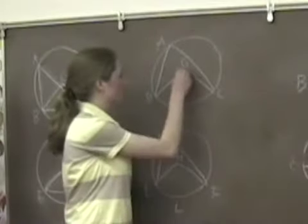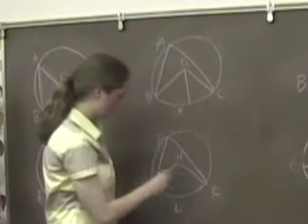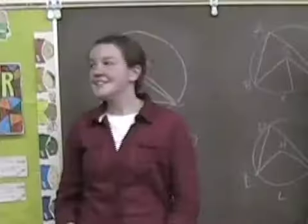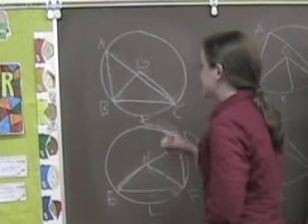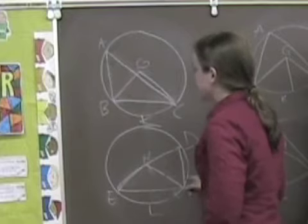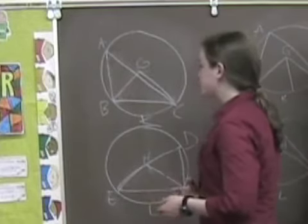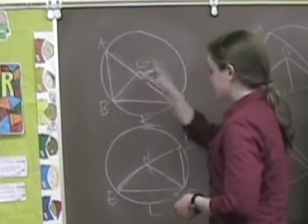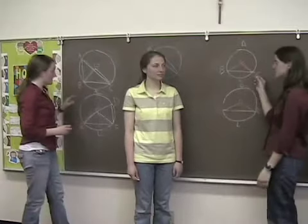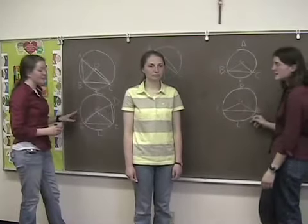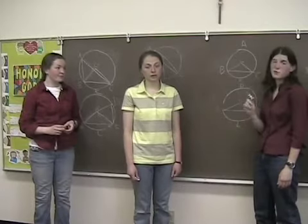And on the straight line B, G, at the point G on it, let the angle B, G, K be drawn equal to the angle E, H, F. Since the angle A is equal to the angle D, the segment E, F is similar to the segment E, F. But similar segments of circles upon equal bases are equal to one another.